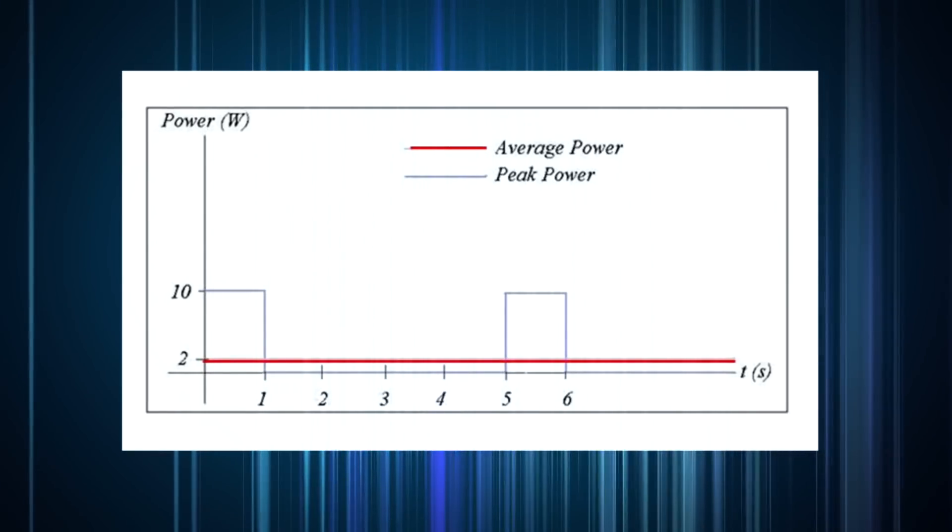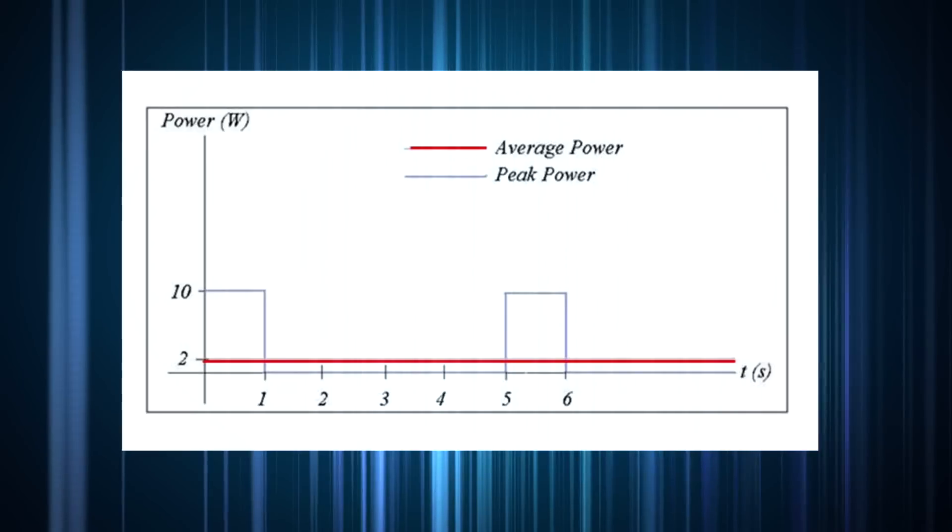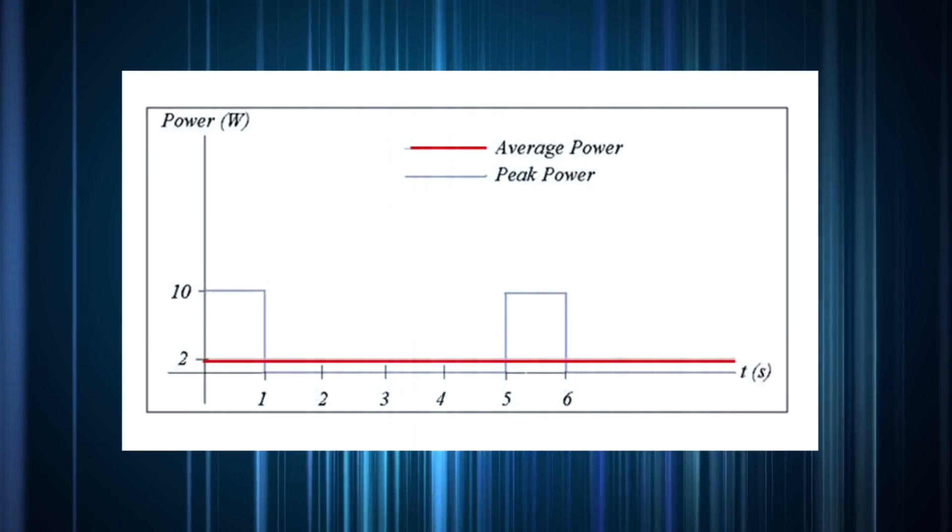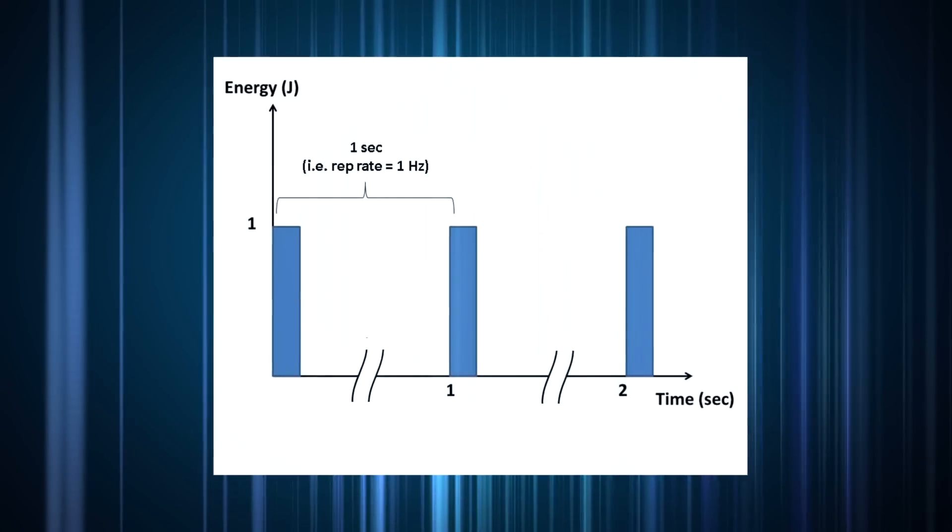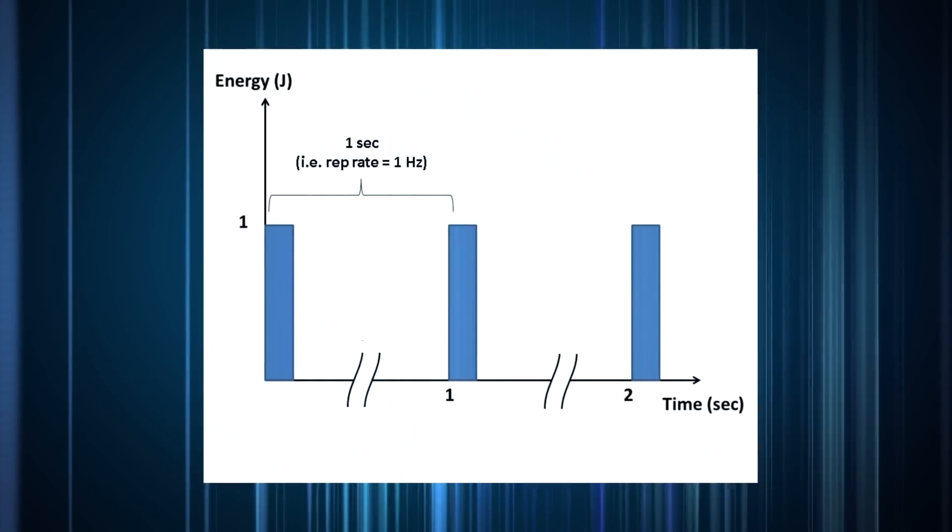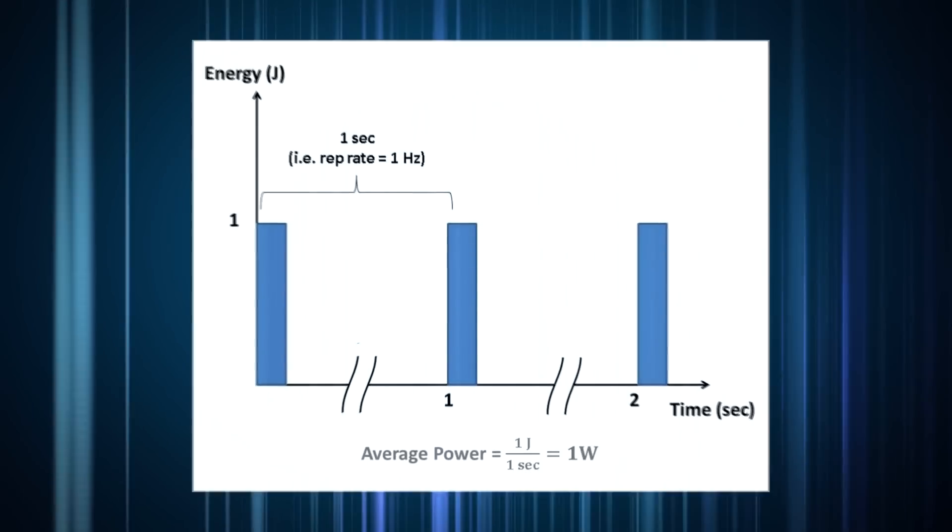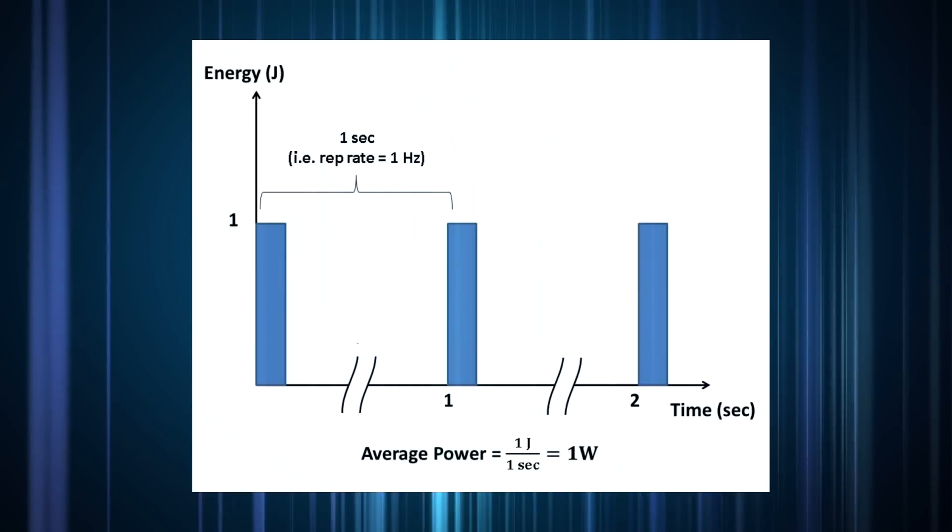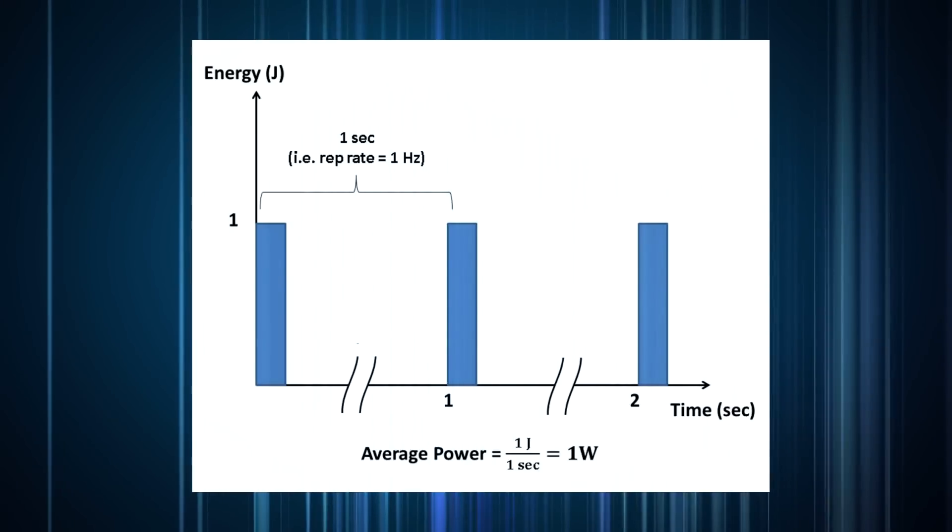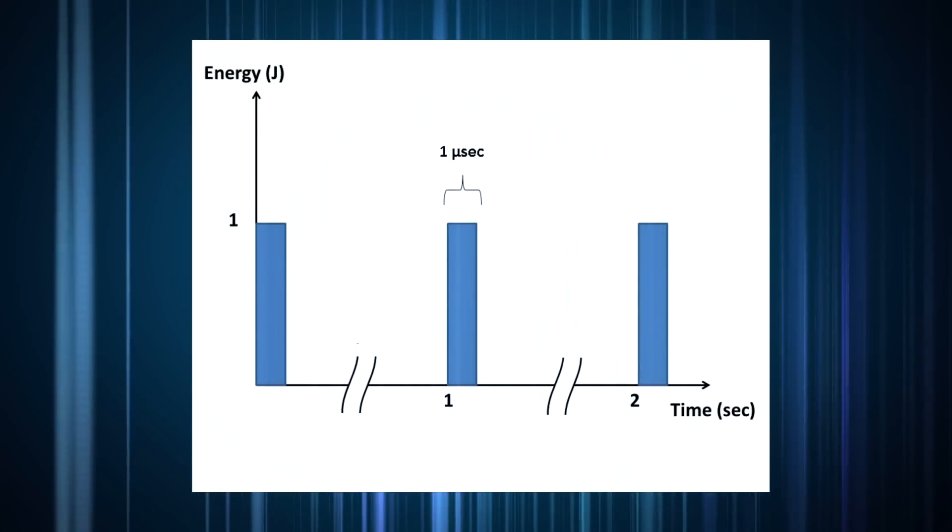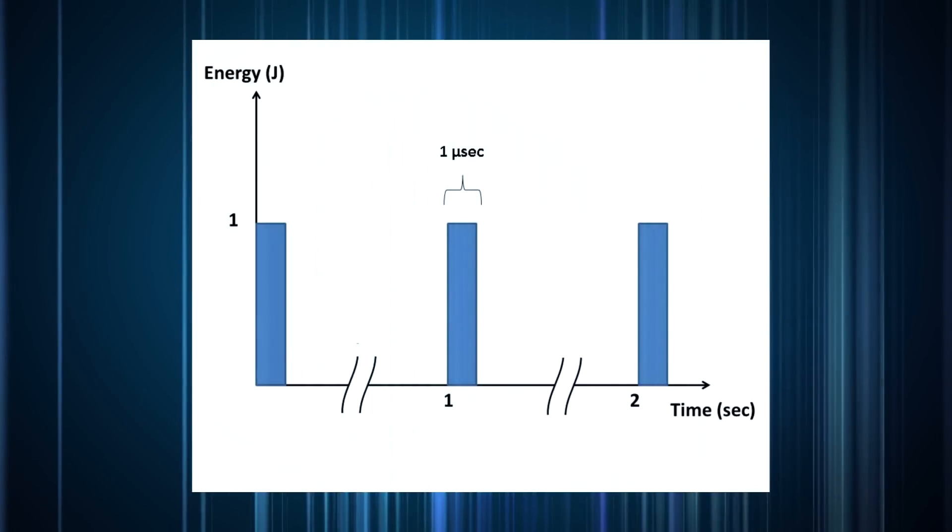The energy of a pulse divided by its width, in other words, the power during the course of the one pulse is the peak power. So you might have a laser emitting one joule pulses at a rate of one hertz. The average power is simply one joule times one hertz, or one watt.